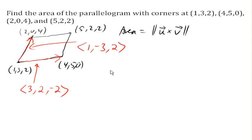So now I need the cross product of those two vectors. So let's find 3, 2, negative 2, cross 1, negative 3, 2. And I can either use the determinant method or calculator or other technology here to calculate out the cross product.